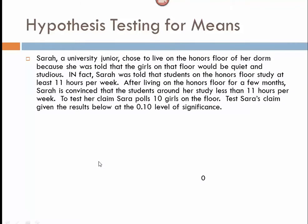Here's another example. And here's one where we're actually given data that we need to calculate. Sarah, a university junior, chose to live on the honors floor of her dorm because she was told that the girls on the floor would be quiet and studious. In fact, Sarah was told that students on the honors floor study at least 11 hours per week. After living on the honors floor for a few months, Sarah is convinced that the students around her study less than 11 hours per week. To test her claim, Sarah polls 10 girls on the floor. Test Sarah's claim given the results below at the .10 level of significance.